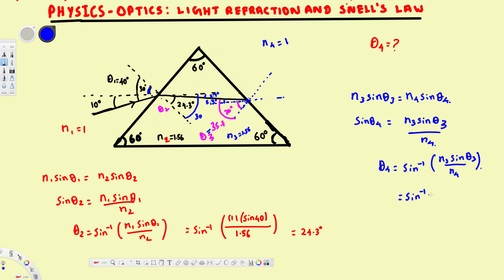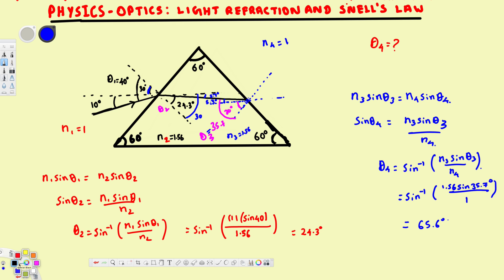Plugging in the values: theta 4 equals sine inverse of (1.56 times sine 35.7 degrees, divided by 1). Calculating this gives 65.6 degrees. So the refracted angle at the second surface is 65.6 degrees from the normal — that is our answer. Theta 4 equals 65.6 degrees.